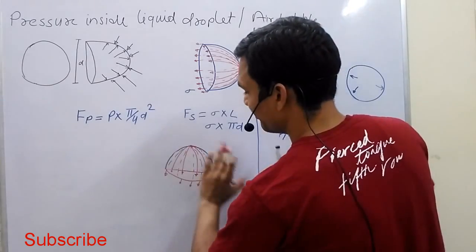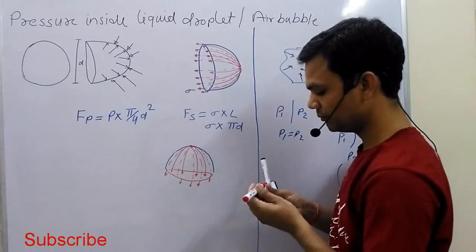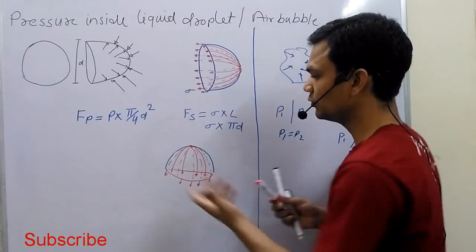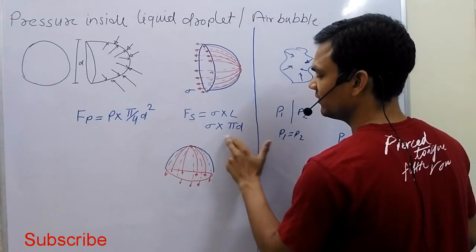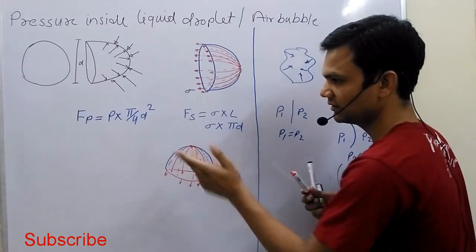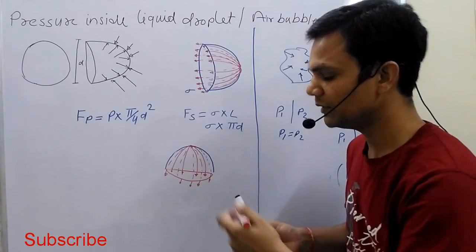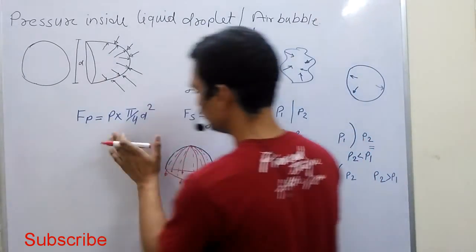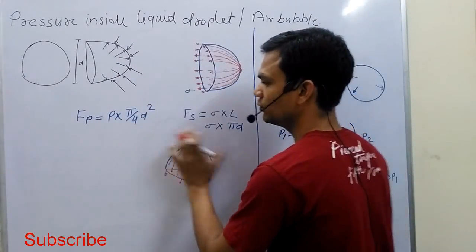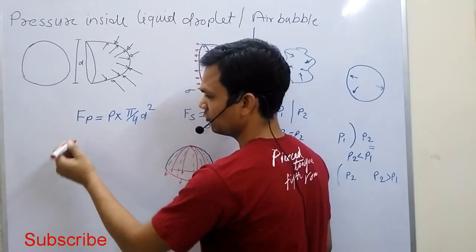The surface tension acts on the periphery of this cross-section. For equilibrium condition, we have to consider these two forces — the pressure force and the surface tension force — to be equal.